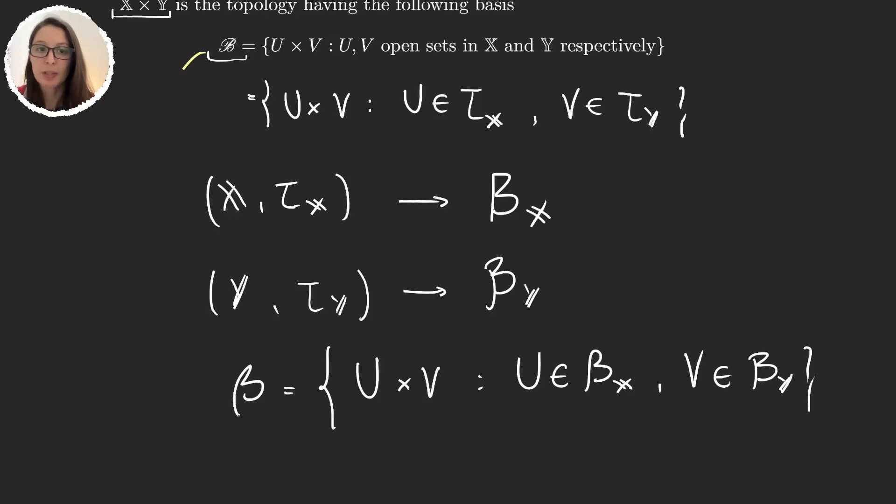So the first definition we gave was a bit more general, because we didn't require our spaces to have a basis. But in the cases where our spaces do have a basis, then we can just simplify things a bit and define the new basis this way. Obviously these two bases are the same. So in the cases where x and y do have bases bx and by, it doesn't really matter which of these two definitions we take for the product topology.